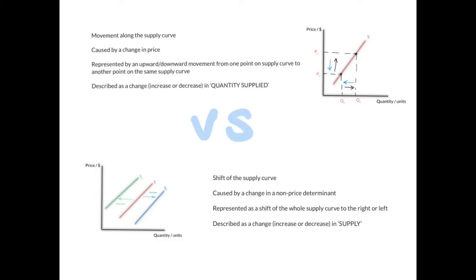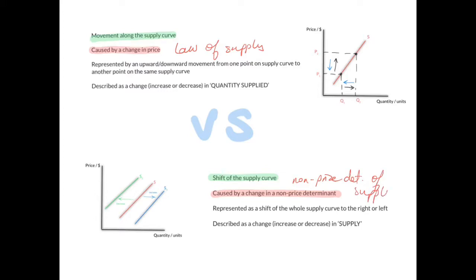You are also required to distinguish between a movement along the supply curve and a shift of the supply curve. I'll explain this using three points. First, a movement along the supply curve is caused by a change in price, while a shift of the supply curve is caused by a change in a non-price determinant. A movement along is explained by the law of supply, while a shift is explained by the concept of non-price determinants of supply.